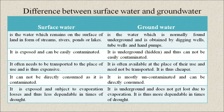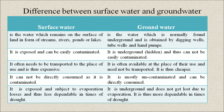Now let us look at the differences between surface water and groundwater. Surface water is the water which remains on the surface of land in the form of streams, rivers, ponds, or lakes. Groundwater is the water normally found underground and is obtained by digging wells, tube wells, and hand pumps. Surface water is exposed and can be easily contaminated, while underground water cannot be easily contaminated. Surface water often needs to be transported to the place of use and is thus expensive, whereas groundwater is often available at the place of use and does not need to be transported, making it cheaper.